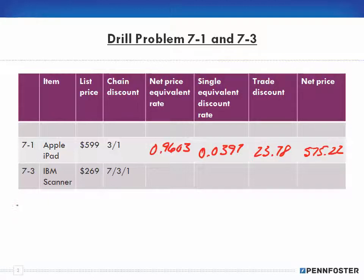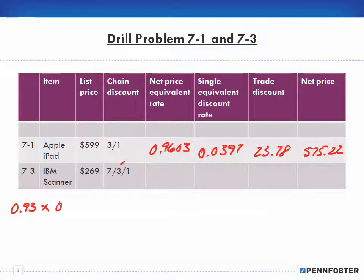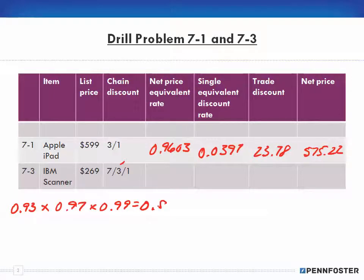The complement of 7% is 93%, so the decimal is 0.93. Then we multiply by the complement of 3%, which is 97%, so 0.97. Then we multiply by the inverse of 1%, which is 99%, or 0.99. Punching that all into a calculator, we end up with 0.893079.